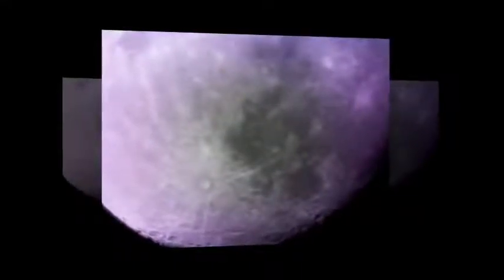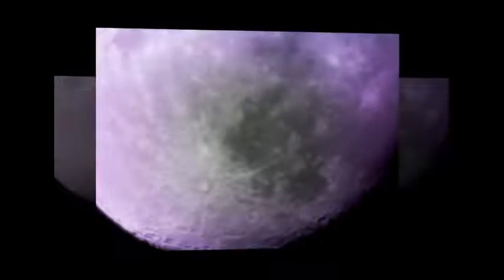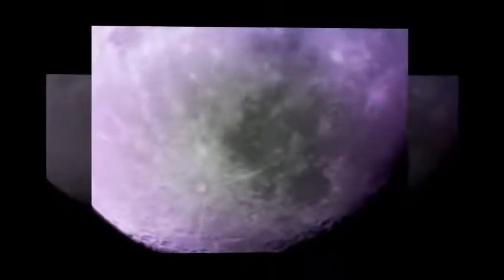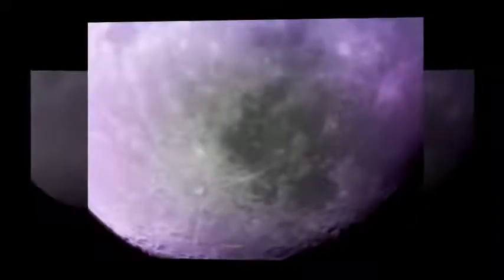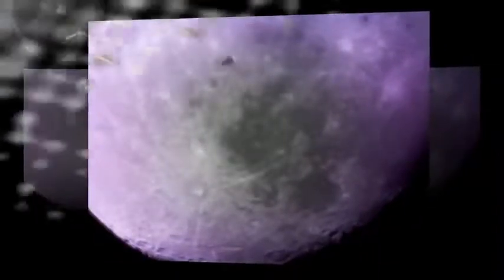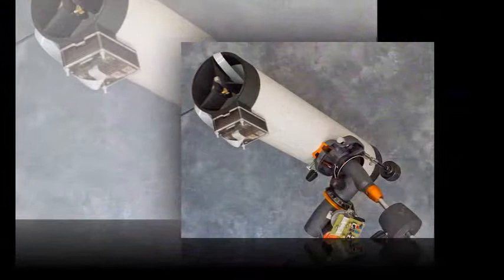Incredible images showing the cratered surface of the moon are the first ever to be taken with a 3D-printed telescope. The £100, $160 PIKIN is able to produce images with a quality equal to telescopes that cost 10 times as much, according to its designers.